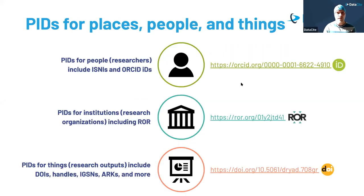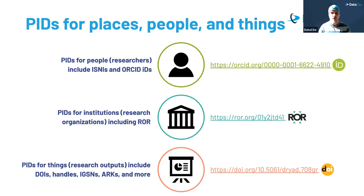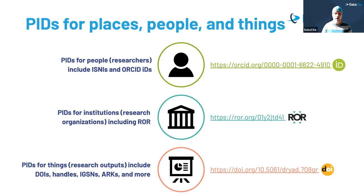For people — specifically researchers — there is the Open Researcher and Contributor ID, ORCID ID, which you may know. For institutions, there is the Research Organization Registry — ROR — which gives each research institution a resolvable PID. Institutions, like people, need to be disambiguated because there may be organizations with similar names that need to be attributed properly. And then there are PIDs for things or research outputs, such as DOIs, handles, IGSNs, ARKs, and many more.